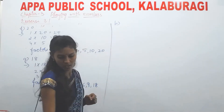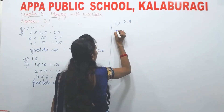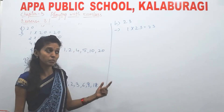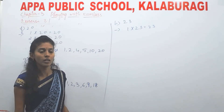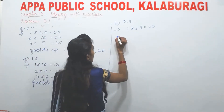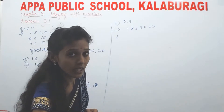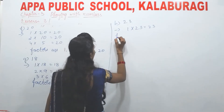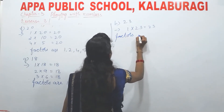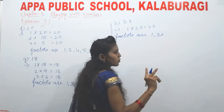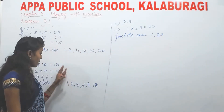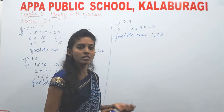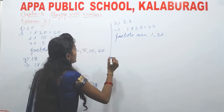Next, H is 23. 1×23=23. In any other number's table will you get 23? No. So 23 has only two factors. The number which has only two factors is called a prime number. So the factors of 23 are 1 and 23 — only two factors. Unlike the previous numbers which had at least four factors, this one has only two. This is known as a prime number.